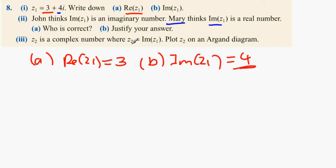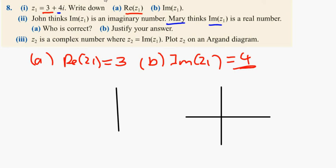Z2 is a complex number where Z2 equals Im(Z1). Plot Z2 on the Argand diagram. So Z2 basically equals 4, which means it's going to be the point 4 plus 0i, which is the point (4, 0).